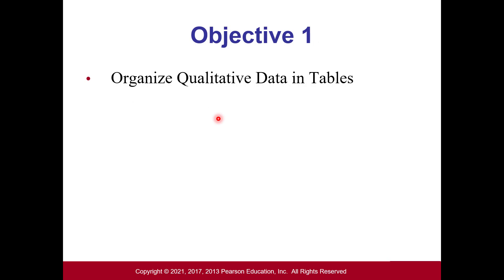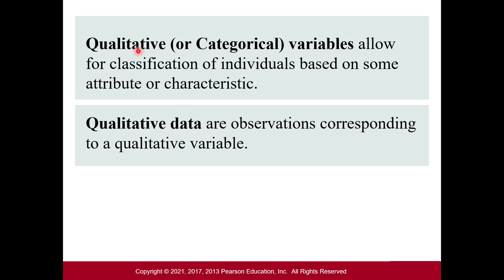Let's start with organizing qualitative data in tables. Qualitative, or categorical, variables are variables that allow for classification of individuals based on some attribute or characteristic — basically some type of quality or category. Qualitative data are observations corresponding to a qualitative variable.